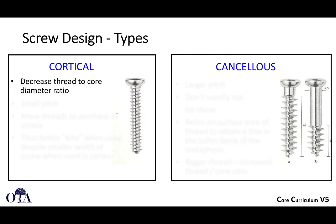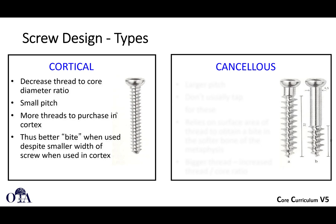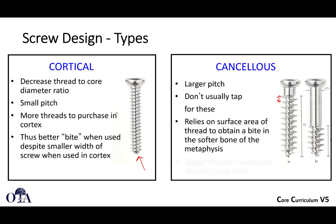Screws look different depending on whether they're cortical or cancellous. A cortical screw has a smaller pitch and decreased thread-to-core diameter ratio, with more threads to purchase in the cortex for a better bite. A cancellous screw has a larger pitch — greater distance between threads. It's often non-self-tapping with a blunted tip, and relies on greater thread surface area to grip the softer cancellous bone. The difference between thread diameter and core diameter is much larger, giving increased purchase in that softer bone.